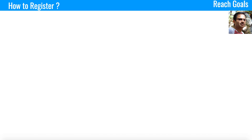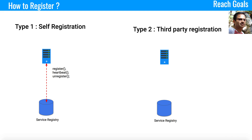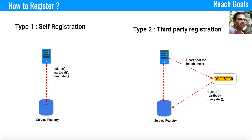There are two types of registration mechanisms. The first is self-registration, where the servers or services running in different locations go and register themselves into the service registry. The second is third-party registration, where a new component called a registrar is introduced. The registrar connects to the different service registries and registers service instances using methods like register, heartbeat, and deregister — so the server itself does not handle registration.